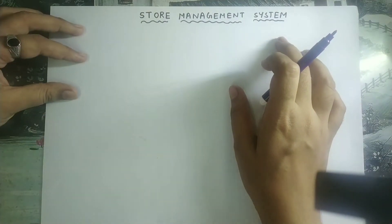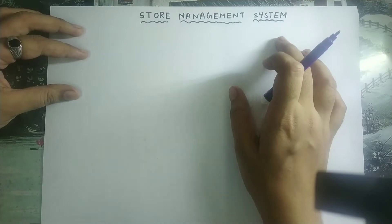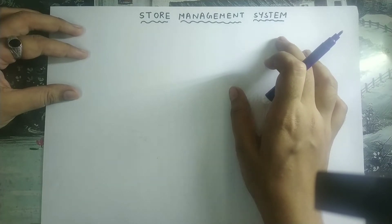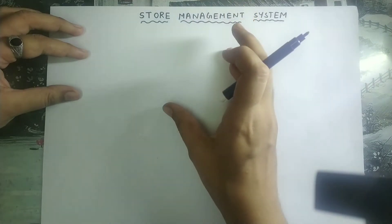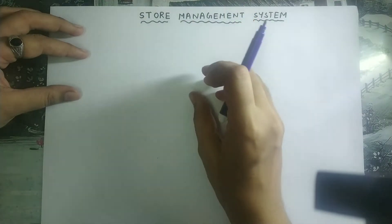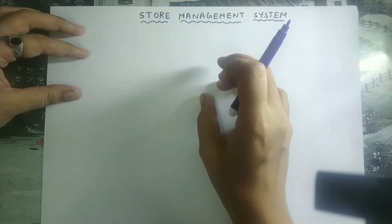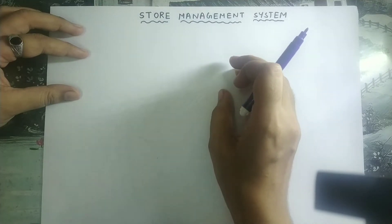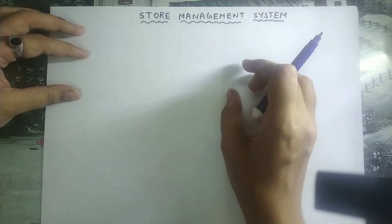The first step for drawing an ER diagram is we need to identify the entities. An entity is an object with physical or conceptual existence. So in a store, there will be employees, products, and we need to sell those products to customers. So all these are the entities.